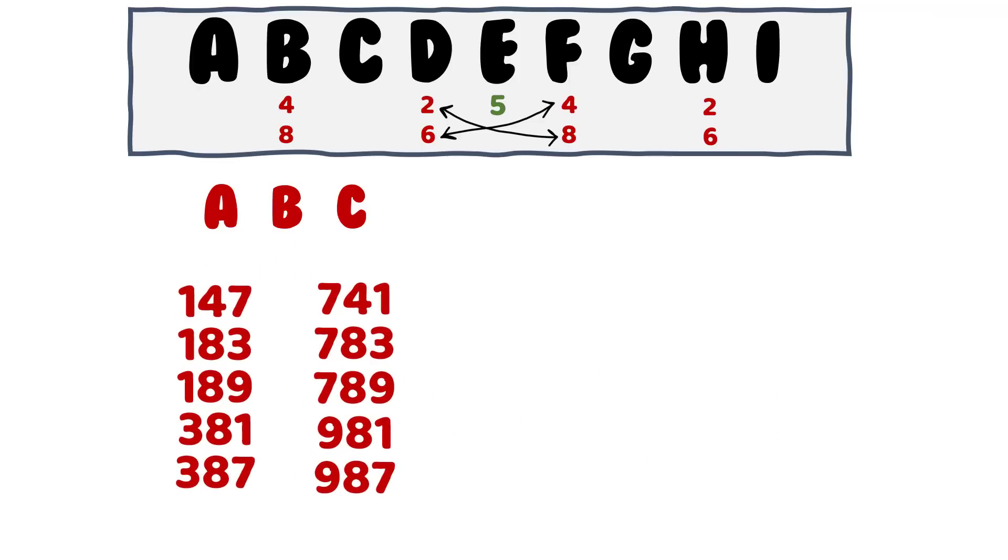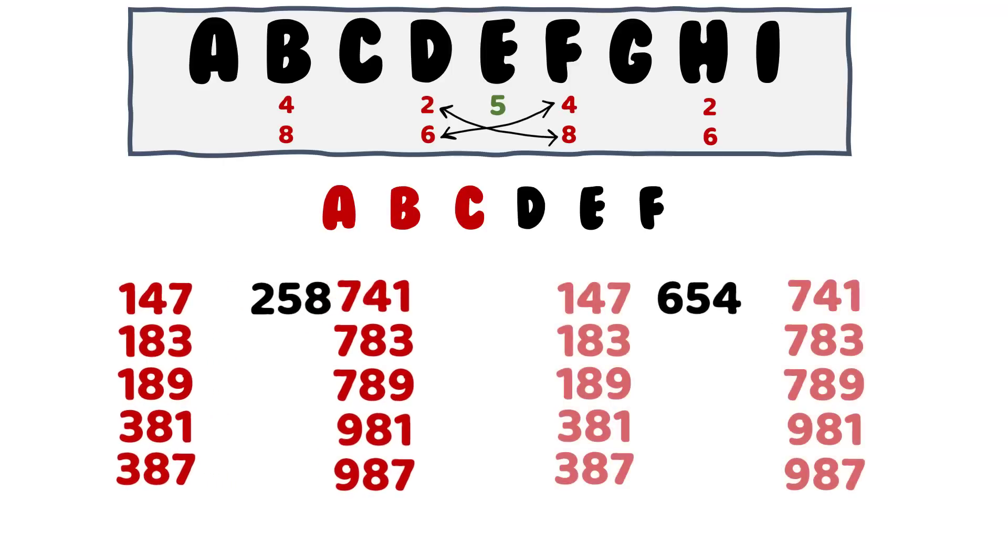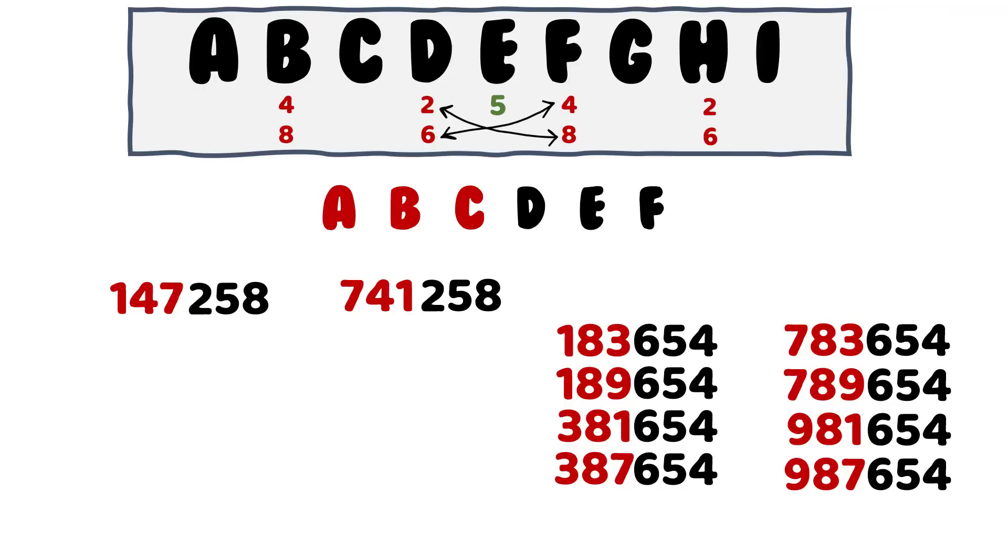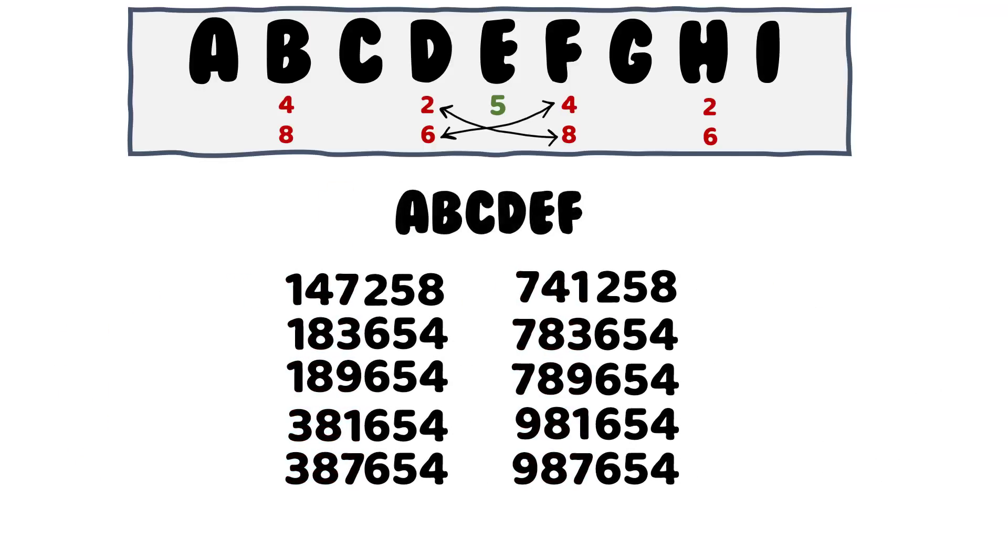We have already calculated the two possibilities for the number DEF as 258 or 654. So now, if we combine ABC and DEF to solve for the six-digit number ABCDEF, then for each of ABC possibilities, there would be two DEF possibilities giving us 20 possibilities for the six-digit number. But here, we can easily eliminate the numbers that are repeating the digits. For instance, the digit 8 is repeated here. So this number would become invalid. So now, the overall number ABCDEF can have these possible values.